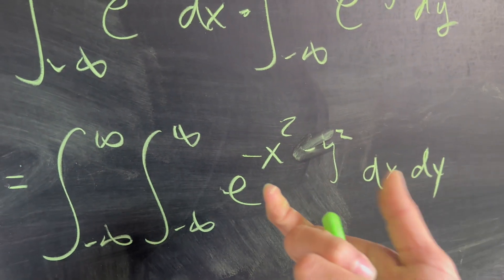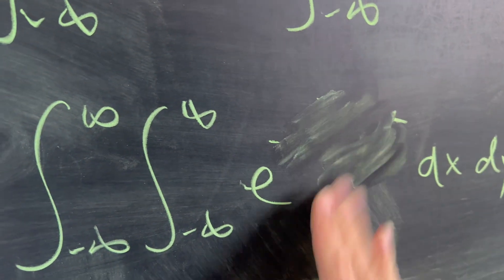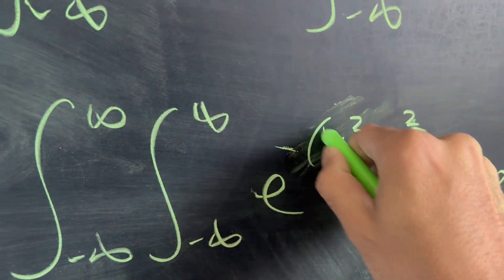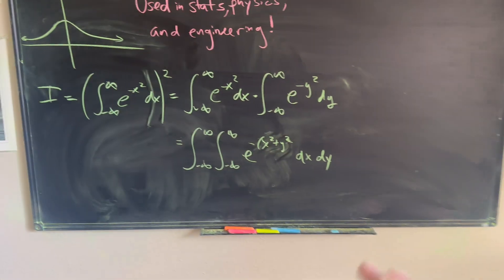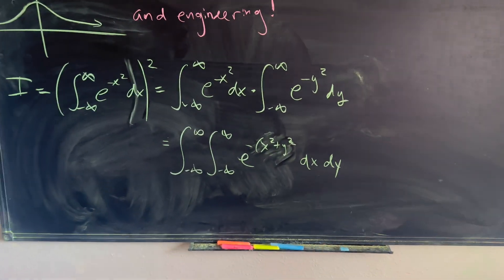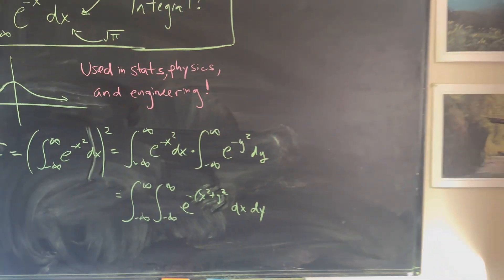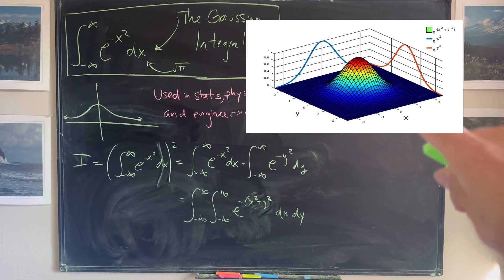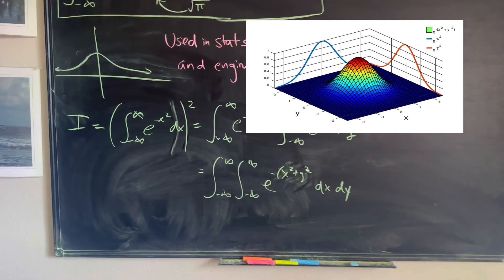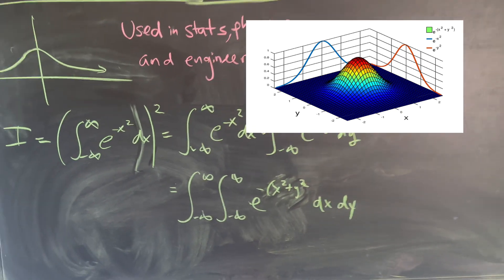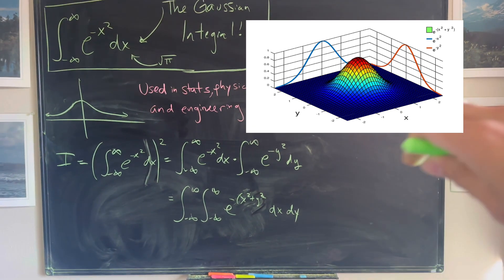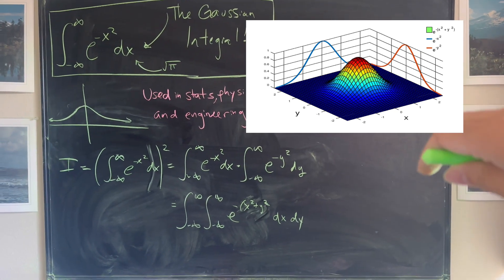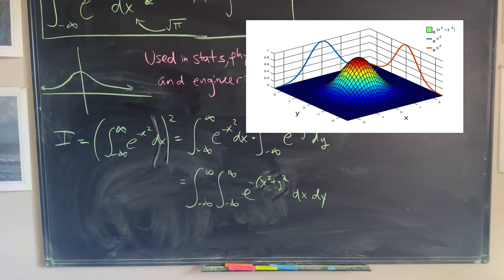If I factor out a negative, this becomes e to the negative (x squared plus y squared). This is now a very special function — it's actually in 3D, and I'm going to put it up on the screen. Now that we're taking a double integral, we're actually trying to take the volume of this surface, which extends infinitely in the x and y directions.